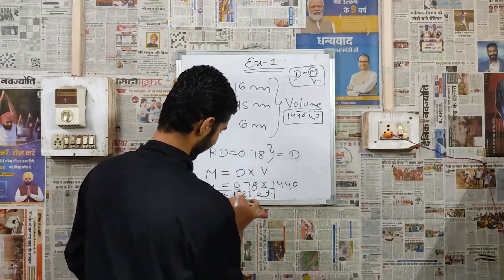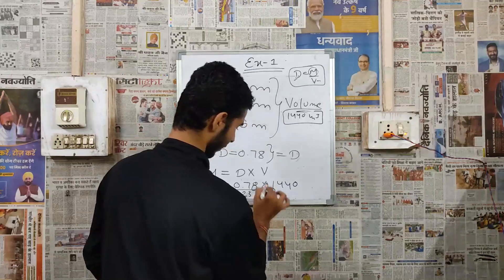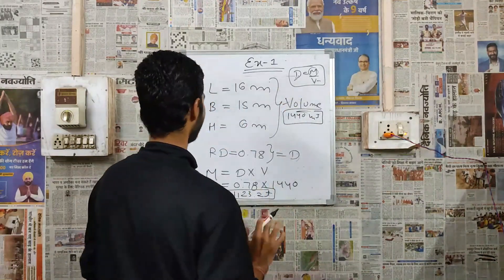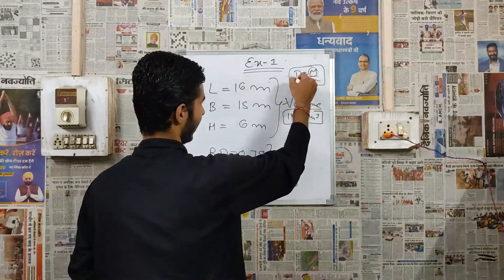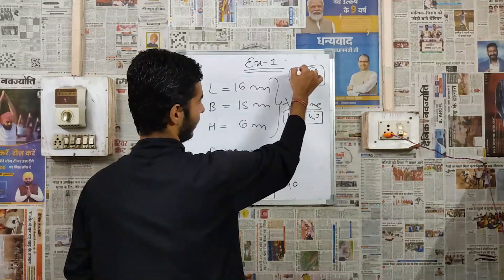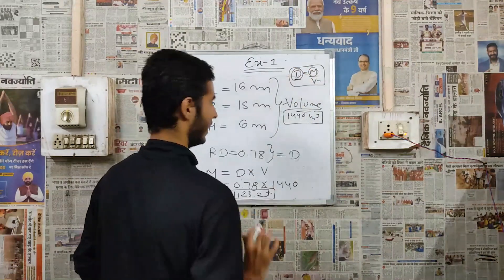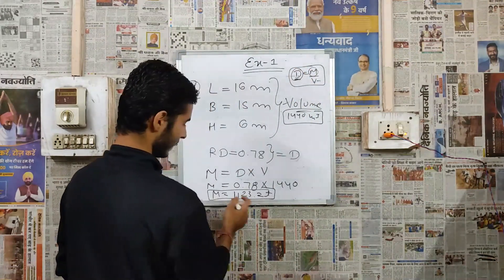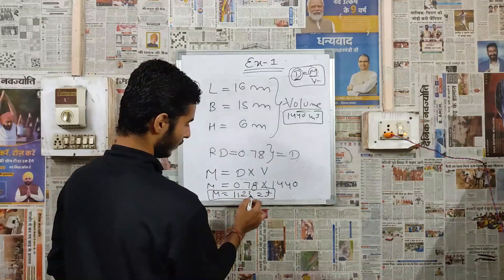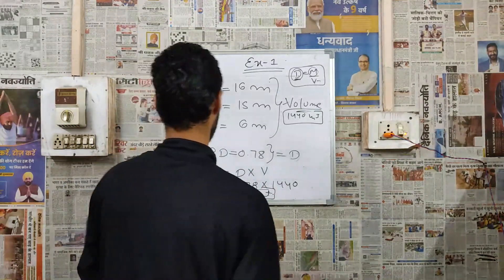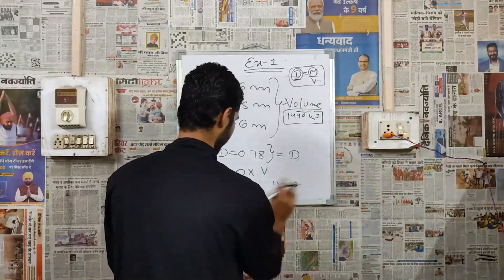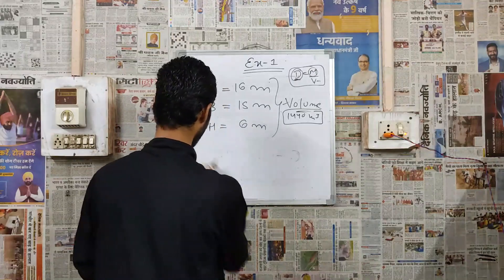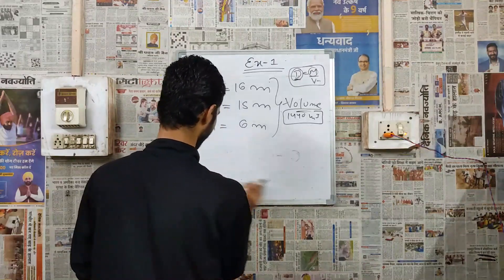Ton is the unit of mass, and meter cube is the unit of volume. For our calculations, we do not write any unit for density. So our answer is 1123.2 tons. We have done Question 1. Let's go on to the second one.